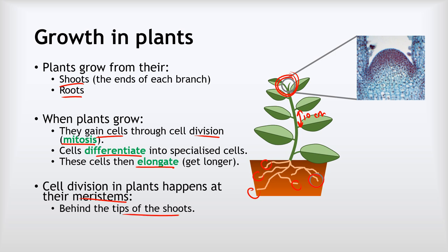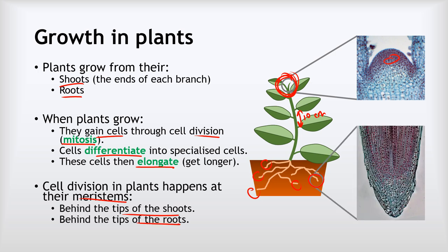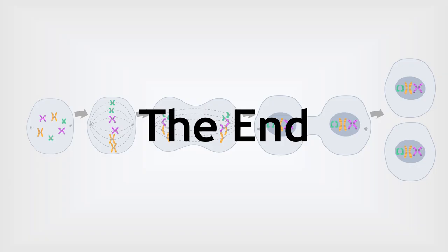In plants, cell division happens at a meristem — found just behind the tips of shoots and just behind the tips of roots. Looking at the meristem under a microscope, cells around it are all small and look the same. As we move away, the cells get bigger — that's elongation — and also look different — that's differentiation. Unlike animals, plants don't have stem cells; all plant cells are able to differentiate shortly after undergoing mitosis.